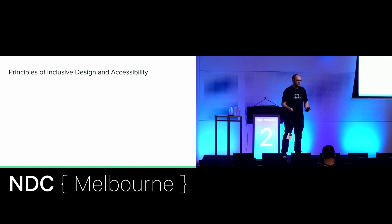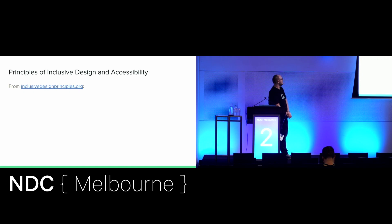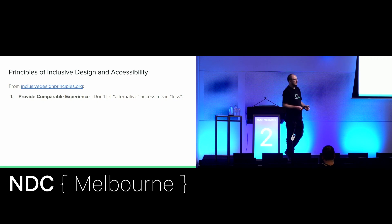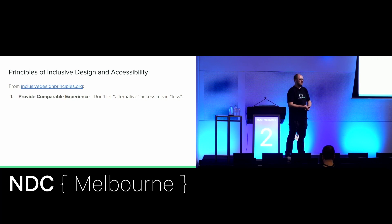Let's quickly go over the principles of creating inclusive designs. I pulled these and paraphrased them from inclusivedesignprinciples.org. First one: provide a comparable experience. If one person is able to access the information, other people who don't have the same abilities should also be able to access the same information, albeit differently. Alt tags allow people who use screen readers to hear what the image is about.